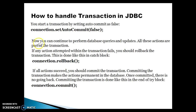If some exception arises, connection.setAutoCommit(false) would be the first statement in your try block. After that, you perform some actions — meaning you execute a set of SQL queries as a single unit of work. If any exception arises, control will go to the catch block, where you will have to roll back the actions that have been performed so far. If all actions succeed, you should commit the transaction. Committing the transaction makes the actions permanent in the database — once committed, there is no going back. Committing the transaction is done at the end of the try block.